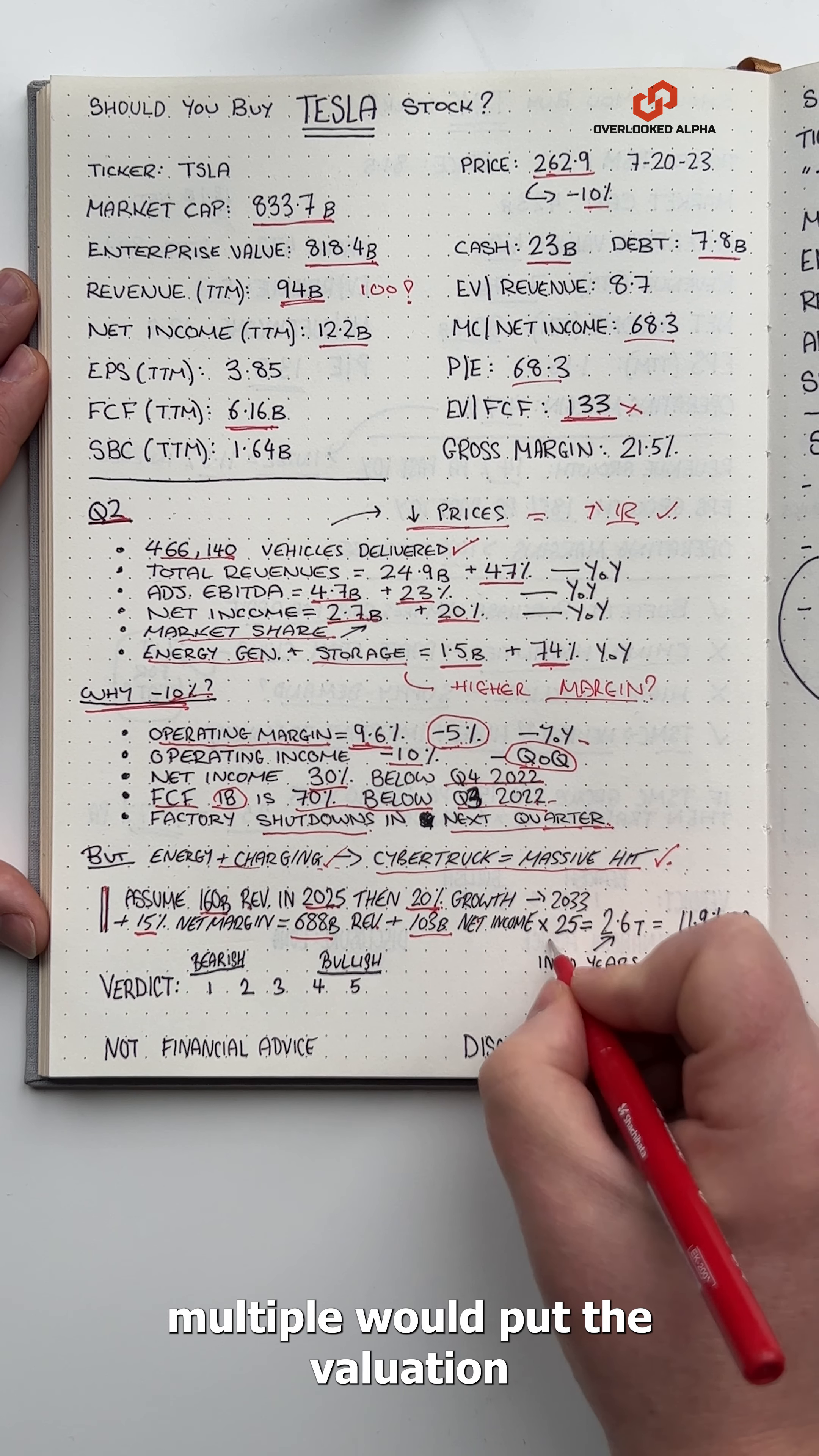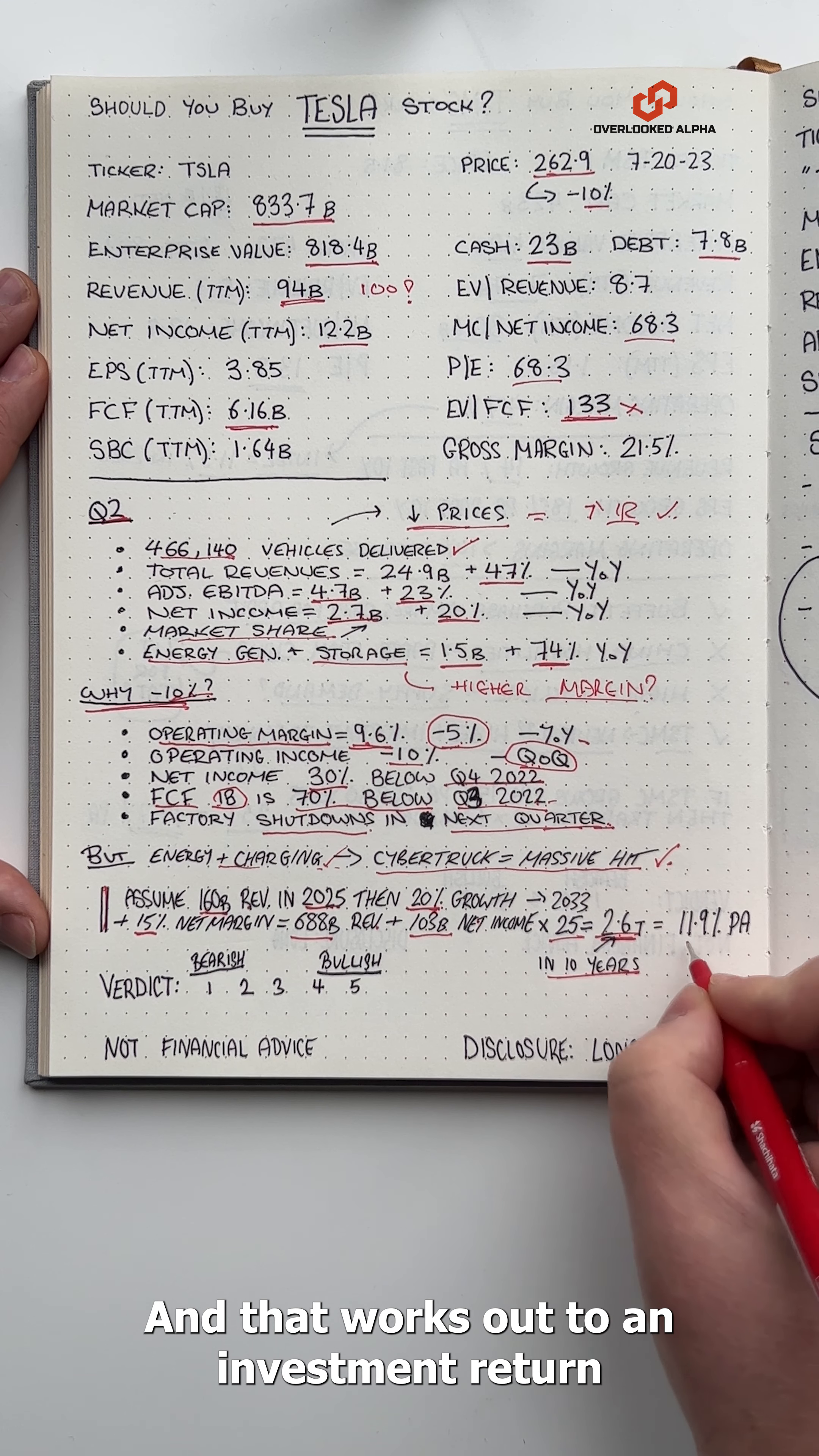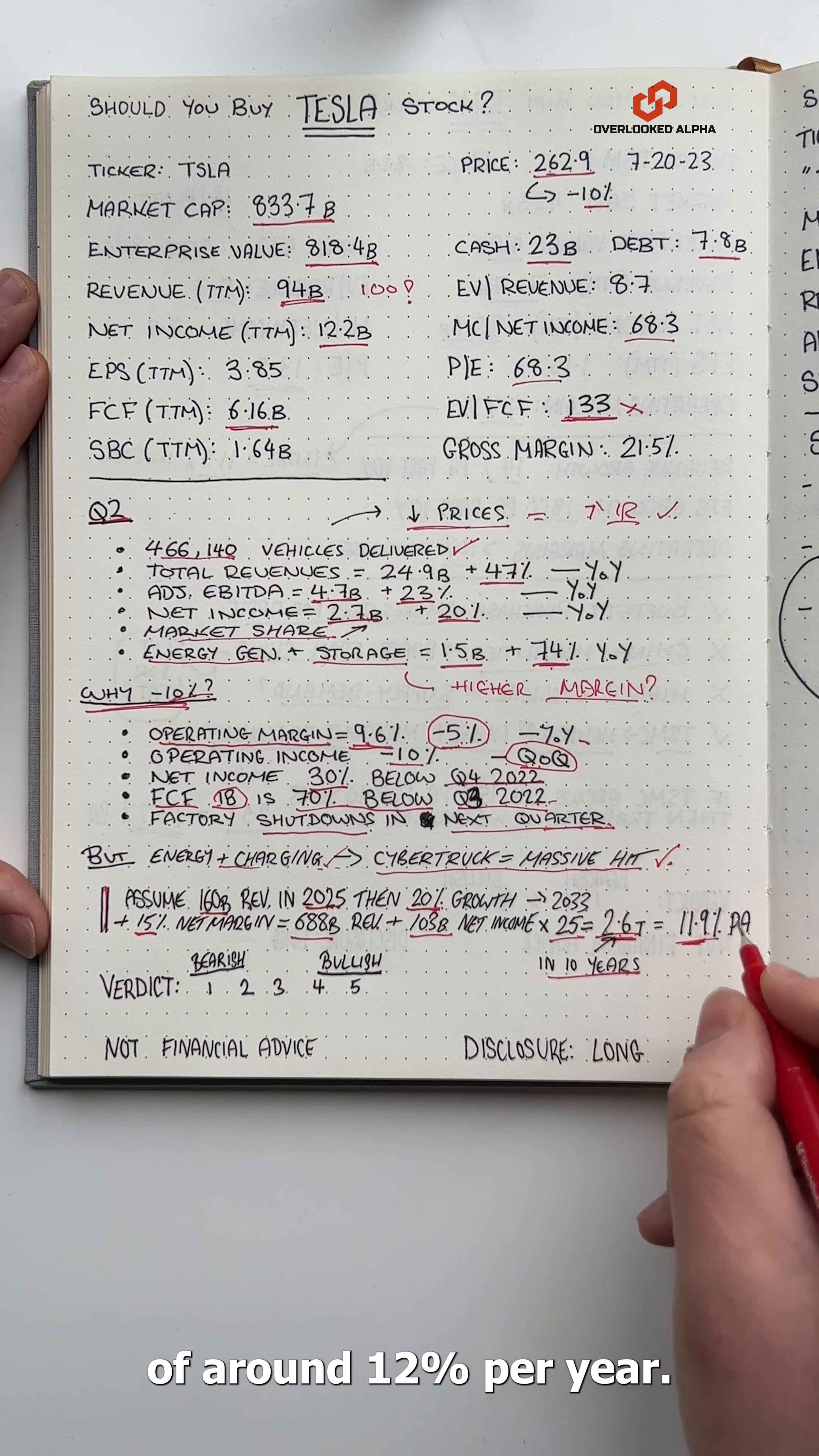That means Tesla would be generating $688 billion in revenue in 10 years time and $103 billion in net income, and a 25 times multiple would put the valuation at around $2.6 trillion, and that works out to an investment return of around 12% per year.